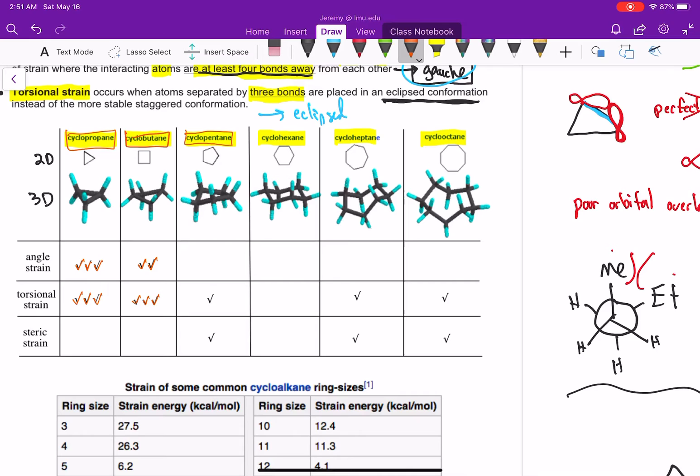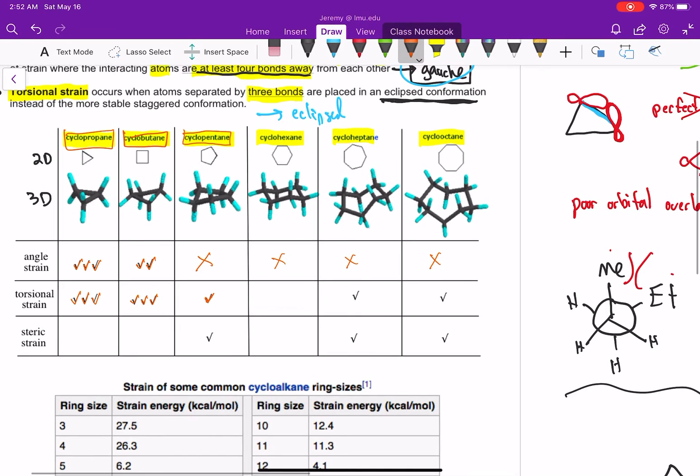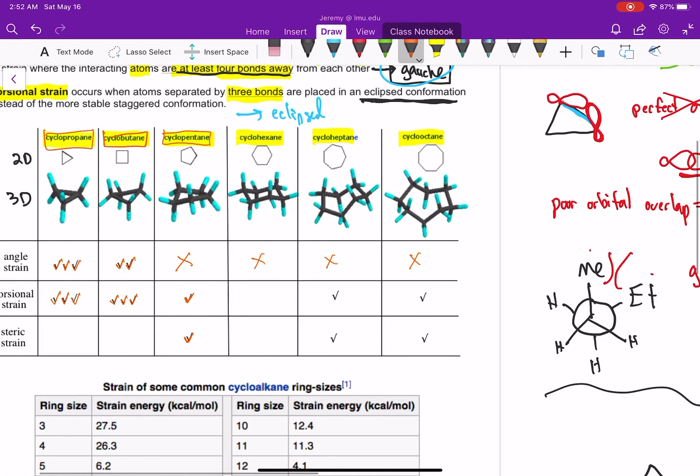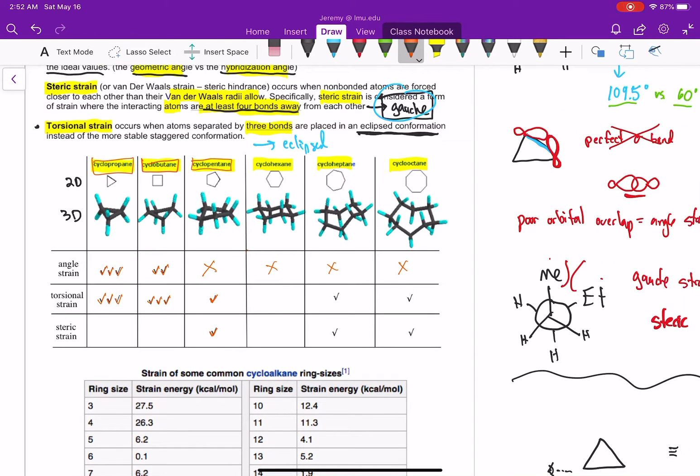As we get up now to rings of five atoms or more, there's a lot less strain. We really don't have any angle strain anymore because there's enough atoms where the bond angles can reach 109.5. Cyclopentane has a little bit of torsional strain and a little bit of steric strain. So that causes a molecule to be a little higher in energy.